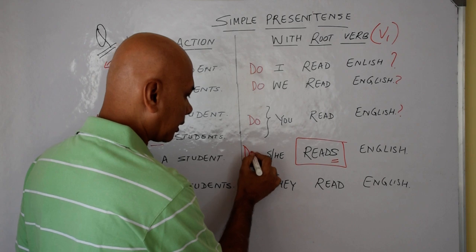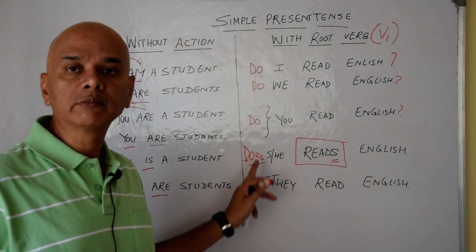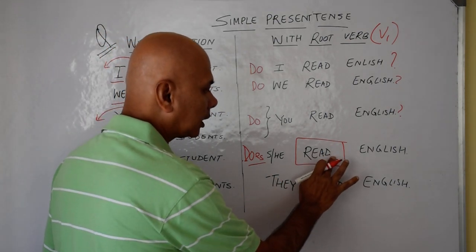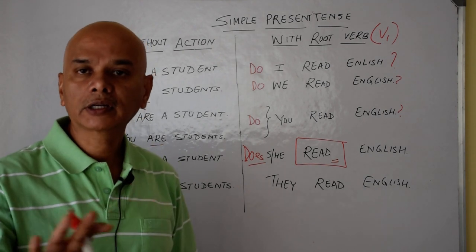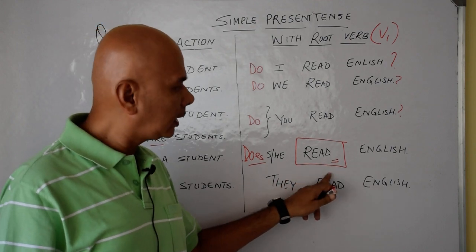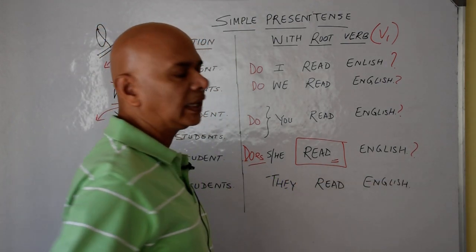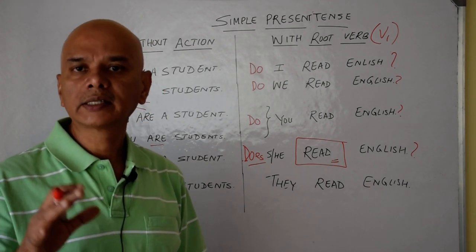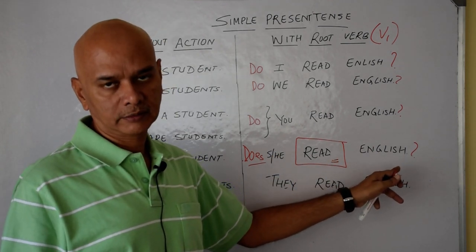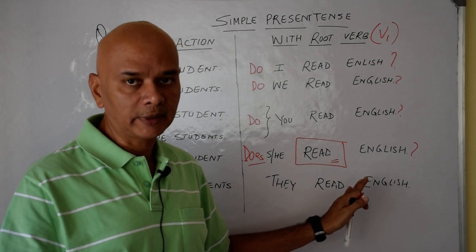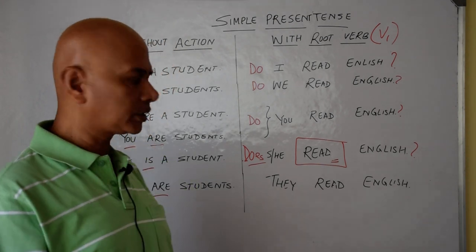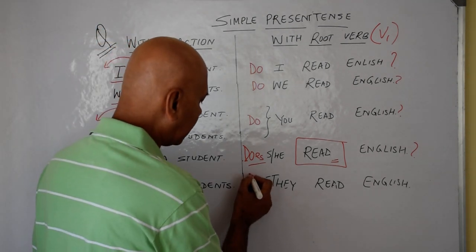Third person singular — be careful here: 'do' becomes 'does.' Does he read English? Does she read English? In the question, 's' will not come with the verb. Answer: yes, he reads English. Yes, she reads English — in the answer, 's' comes back with the verb.